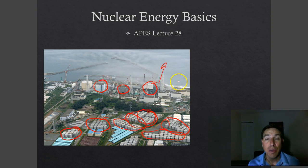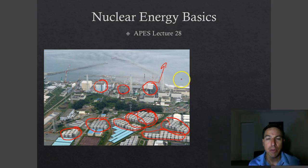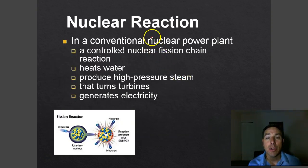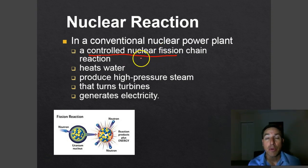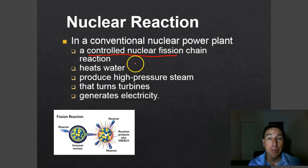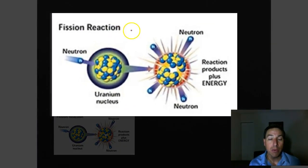Nuclear energy, although it sounds great, has a lot of drawbacks. Let's find out about how a conventional nuclear power plant works. The job of the power plant is to control the nuclear fission chain reaction. If you don't control the reaction, what you have is a nuclear bomb. In this case they control that reaction to heat up water, which turns a turbine, which turns a generator to produce electricity — just like a coal-fired plant.